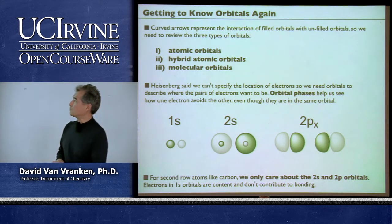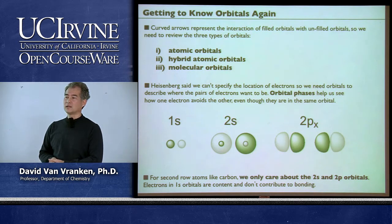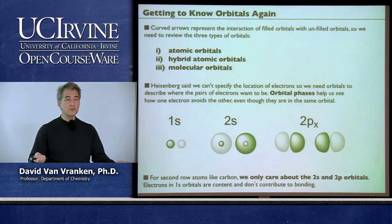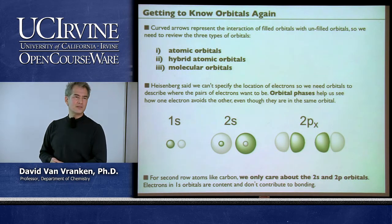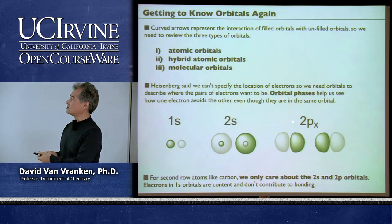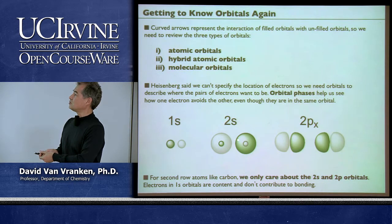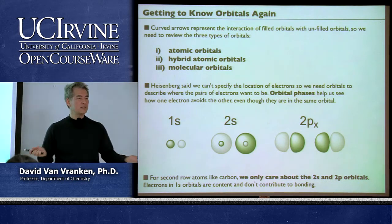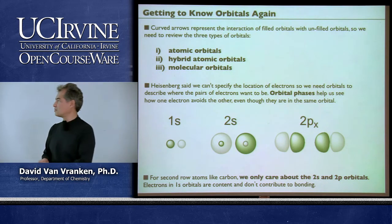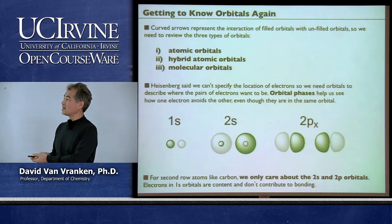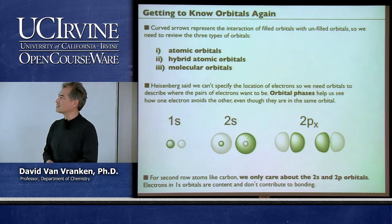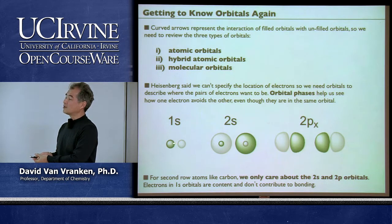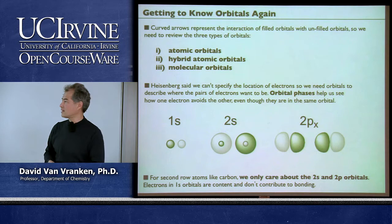For atomic orbitals, the important thing is orbital phasing—later in this course we'll discuss pericyclic reactions where phasing is critical. For second-row atoms, 1s orbitals are very close to the nucleus and very low in energy. When we step up to 2s and 2p orbitals, there's now a node, so there are two different phases. For 2p orbitals it's obvious—two possibilities for orbital phasing, which are arbitrary. When I draw 2s orbitals I won't draw the inner phase core—it's there, but it makes drawings too complex. The 1s orbitals are so low in energy we're not going to worry about them; they're not important for bonding.